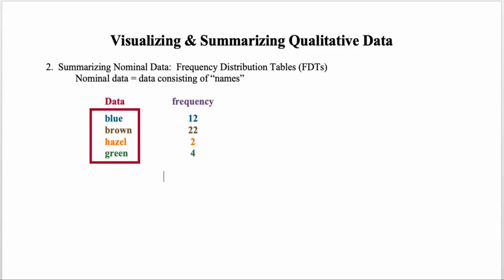We want to emphasize that the data are the values observed for the individuals — in this case, the eye colors — and the frequencies are the counts of those values, how often those values actually showed up in the data set. The data is not the frequencies.